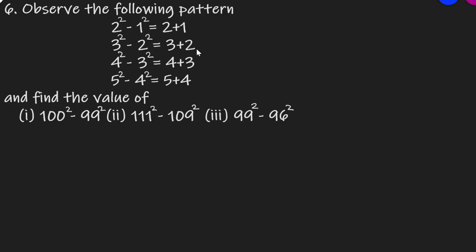Hi! Welcome to my channel. It is going to be solved by question number 6. Observe the following pattern: 2 square minus 1 square is equal to 2 plus 1; 3 square minus 2 square is equal to 3 plus 2; 4 square minus 3 square is equal to 4 plus 3; 5 square minus 4 square is equal to 5 plus 4. And find the value of 100 square minus 99 square, 111 square minus 109 square, and 99 square minus 96 square.